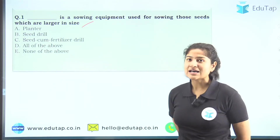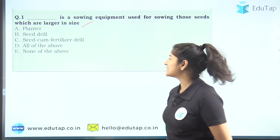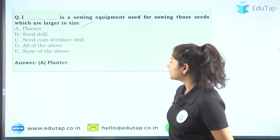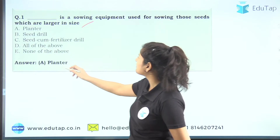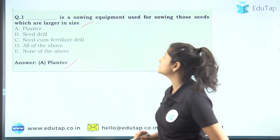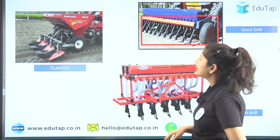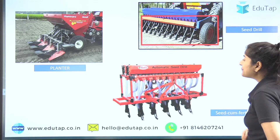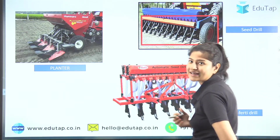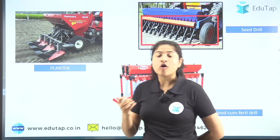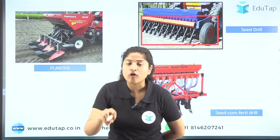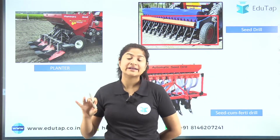The correct answer is option A, that is 'planter.' These are all implements and machineries used for the sowing of seeds.